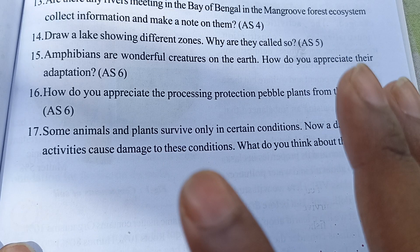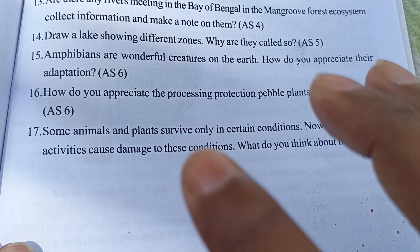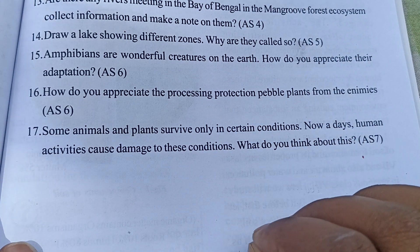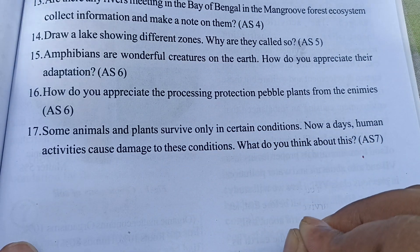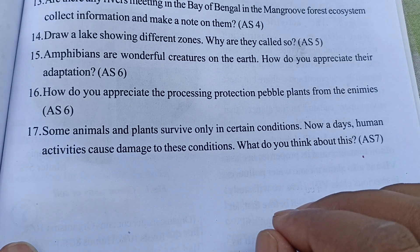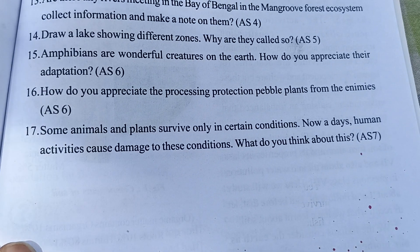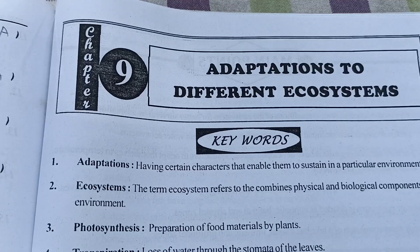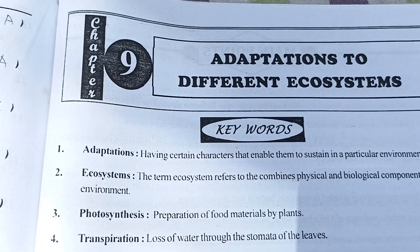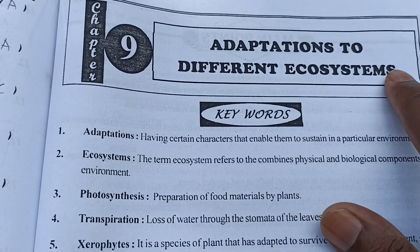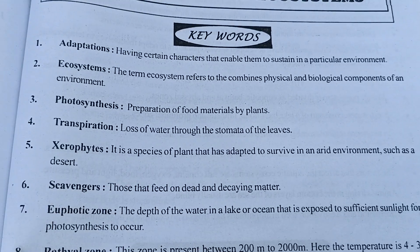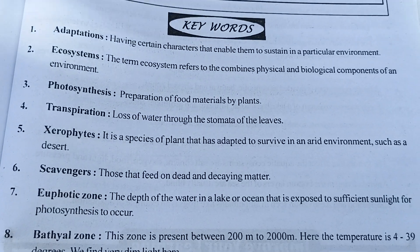Whatever is in it we will discuss, and we will also see the activity. Now let's move to the answers. You can see this is our Chapter number 9: Adaptation to the Different Ecosystems, and these are the keywords.